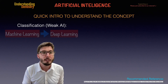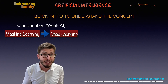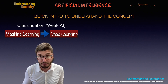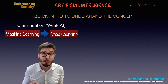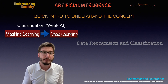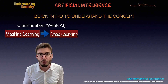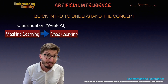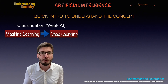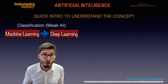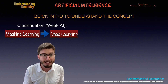Let's talk about the methods. We have machine learning, which further developed into deep learning — methods that allow for recognition, clustering, and classification of data. Machine learning and deep learning can work with supervised or unsupervised data. When we work with labeled data, the method is more accurate and requires a lower complexity algorithm.